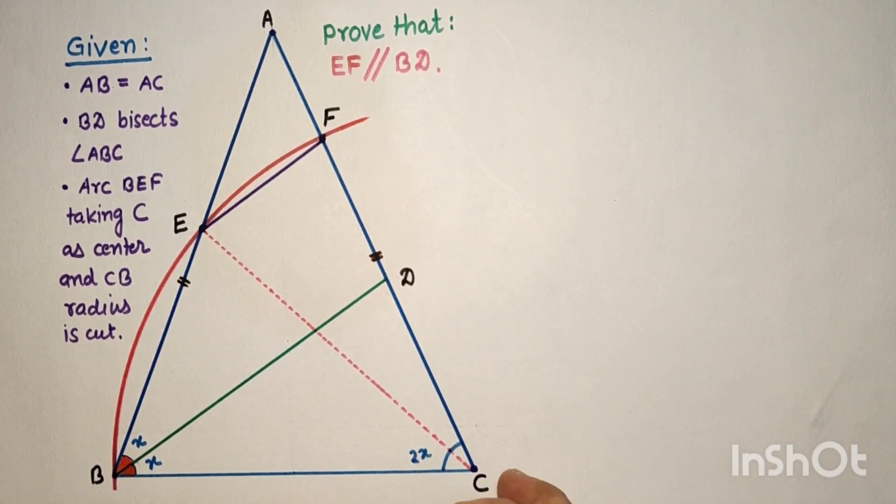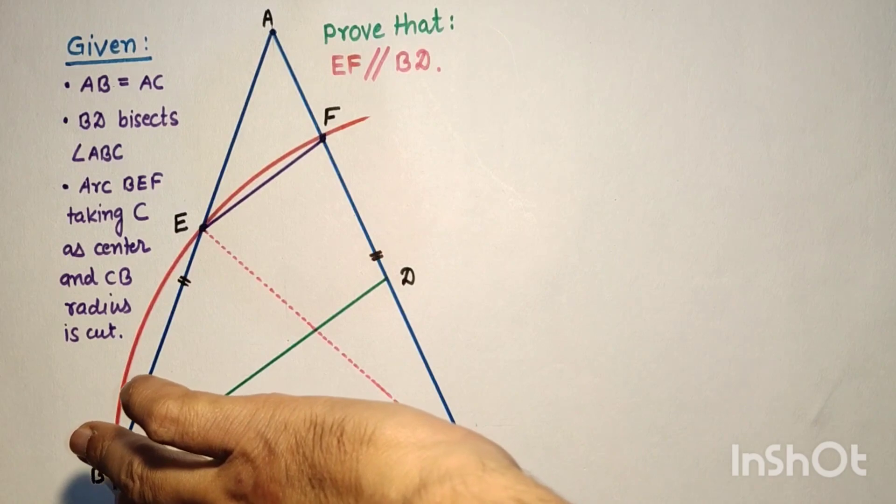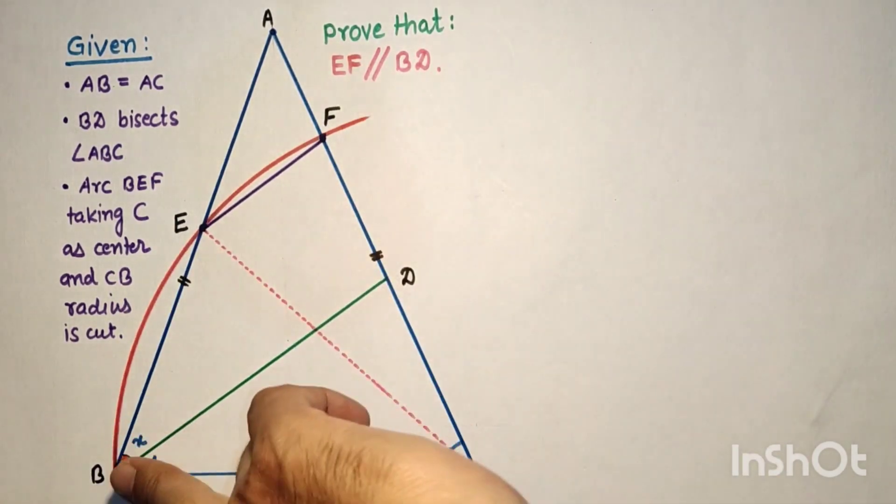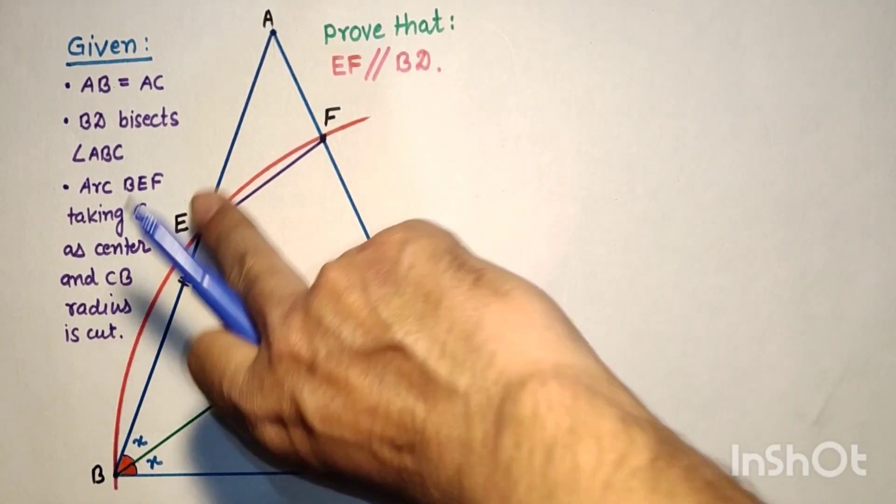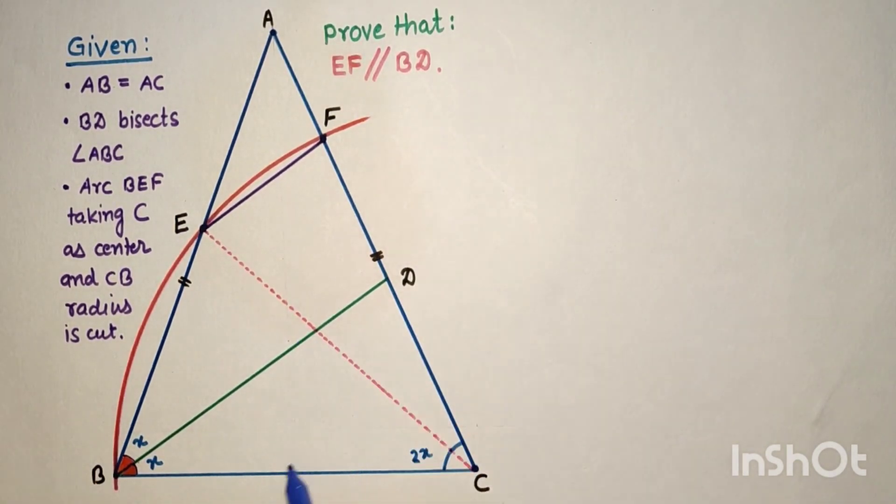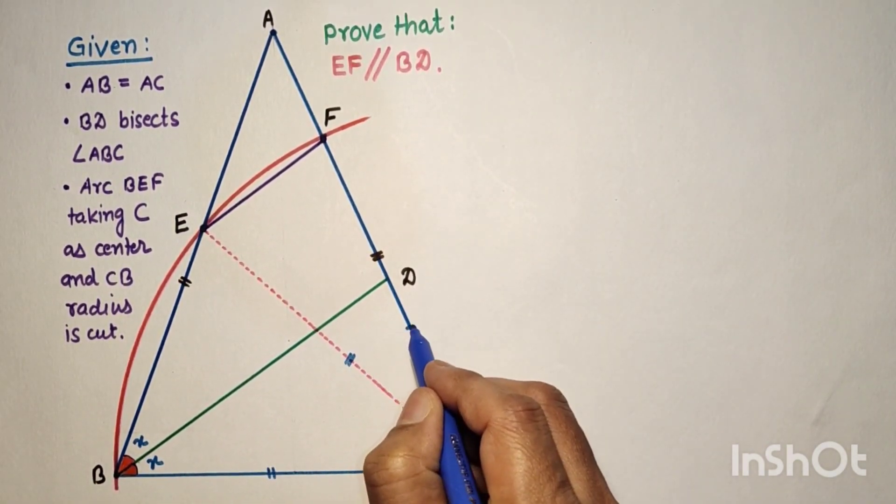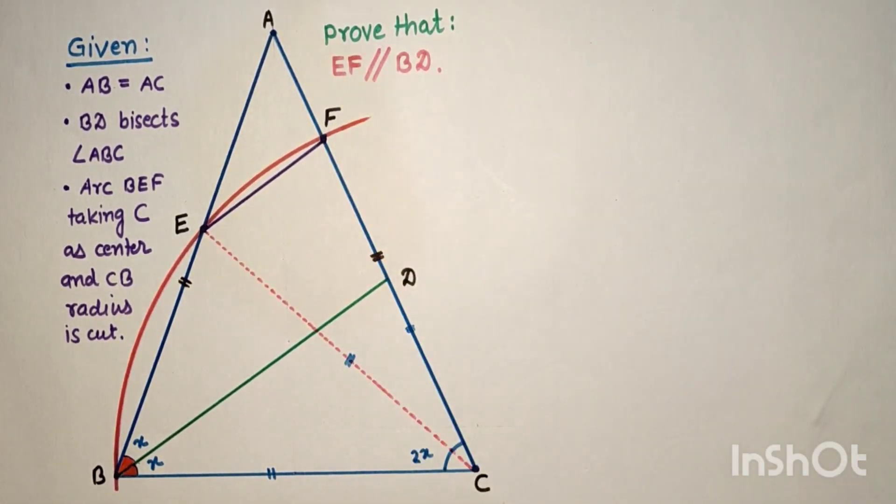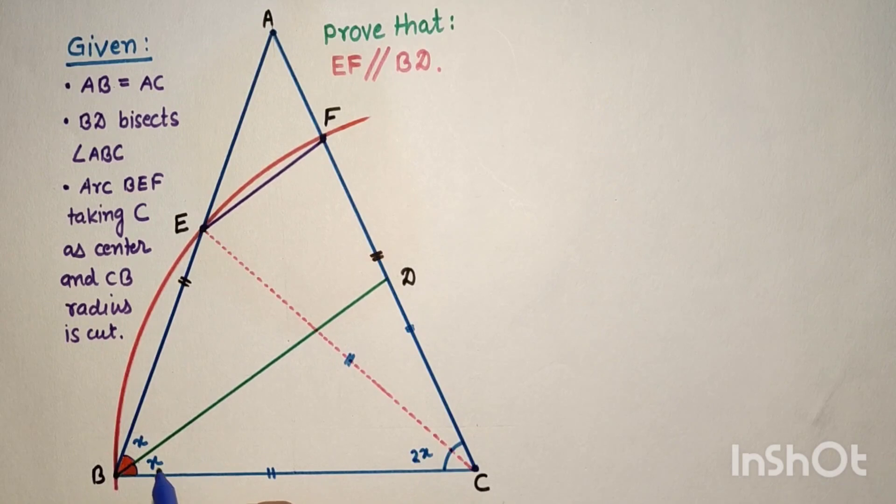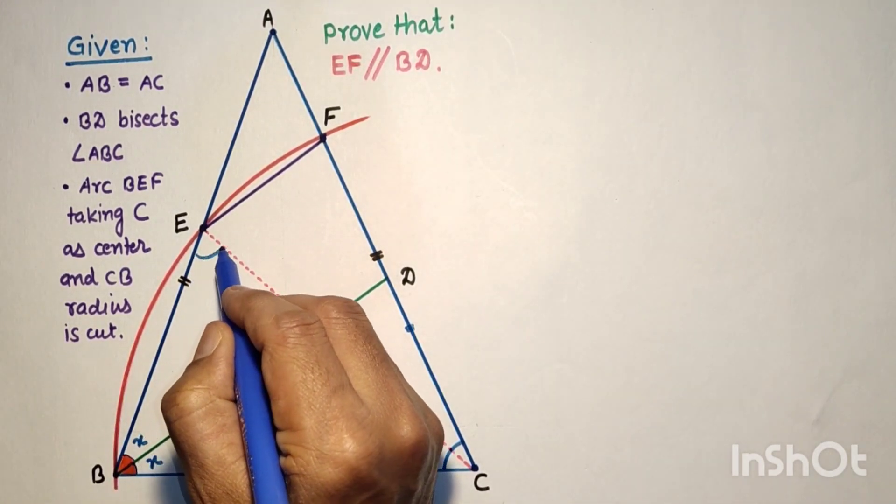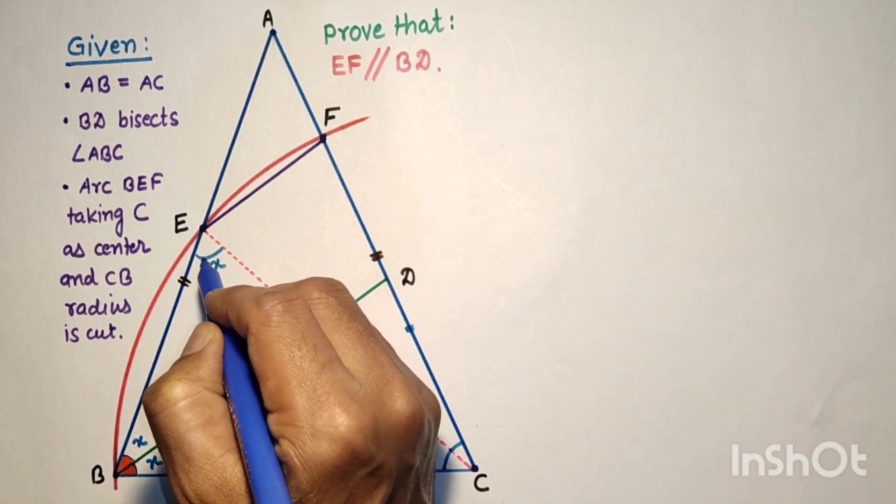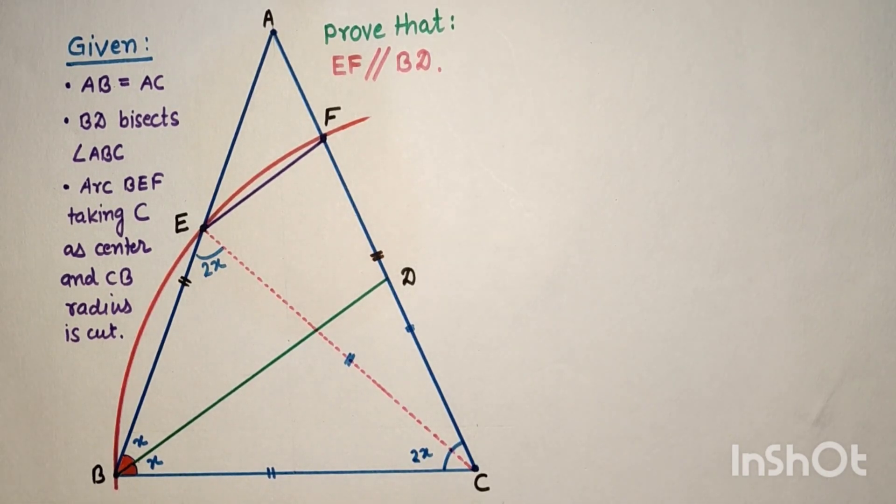Since CB is the radius of the arc, CB equals CE equals CF. This is equal to this is equal to this, also CF. Since CB equals CE and this is 2X, the base angles will also be equal, so this is 2X.